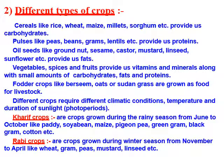Crops are of different types: cereals, pulses, oil, vegetables, water crops. Cereals like rice, wheat, maize, millet, and sorghum provide carbohydrate or energy-giving food. Pulses like pea, beans, gram, and lentils all provide us body-building protein.